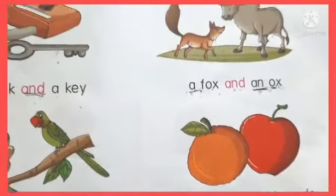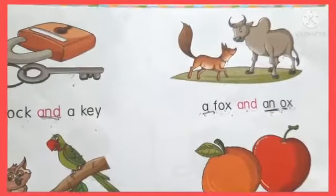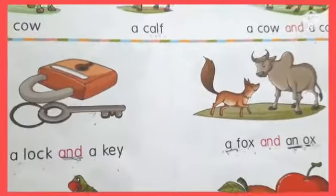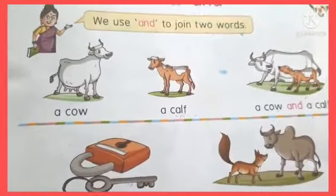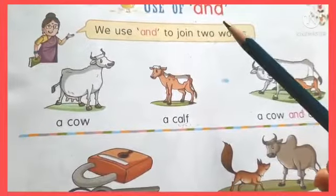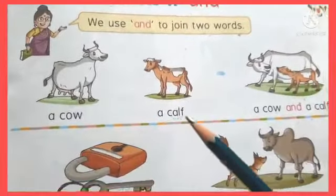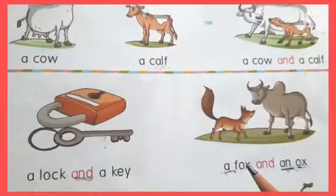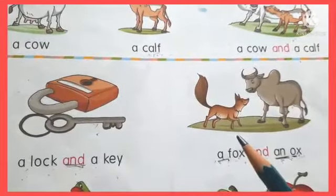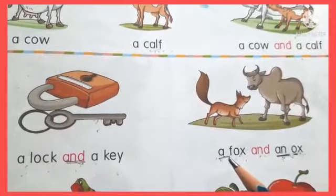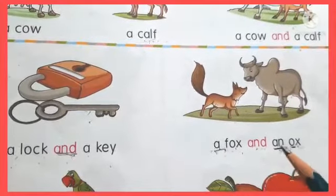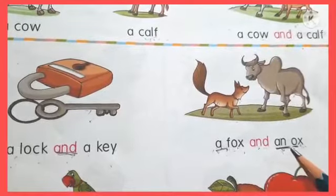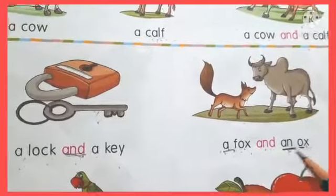So, my dear children, aaj hum inhi dono concepts ko dhyan mein rakte hue aaj ka exercise complete karenge. We have to use 'and' to join two words, and we have to pay attention that if the word begins with a consonant, then we have to use 'a', and if the word begins with a vowel, then we have to use 'an'.